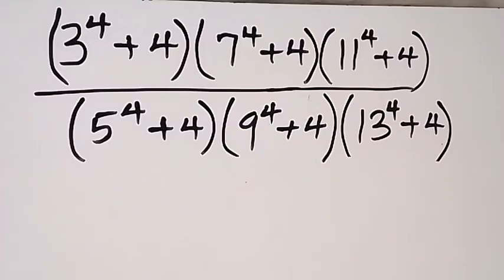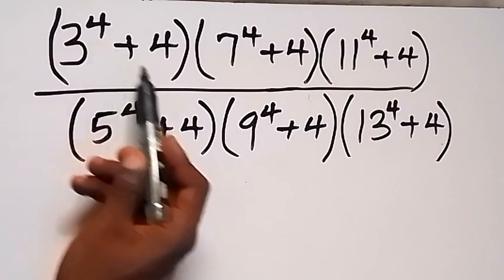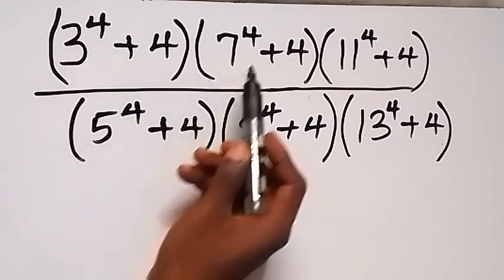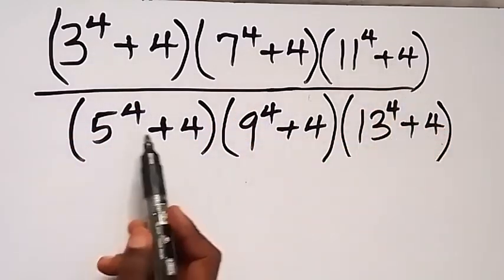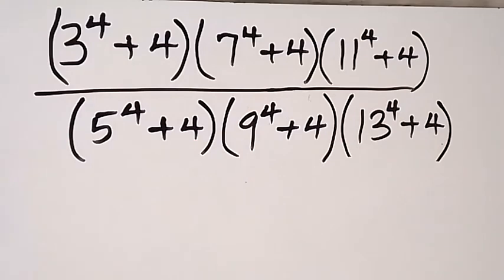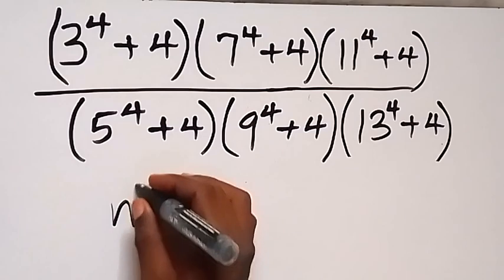Hello, you are welcome. We will solve this nice olympiad problem. We have a nice pattern: n raised to power 4 plus 4, appearing in both the numerator and denominator. Let's look at the general form n⁴ + 4 and simplify it.